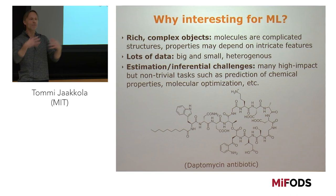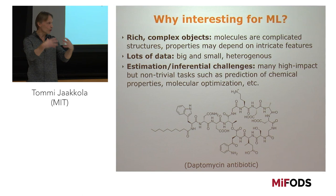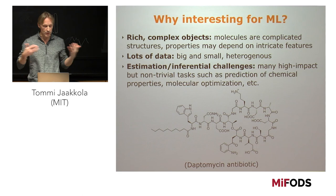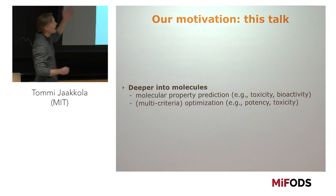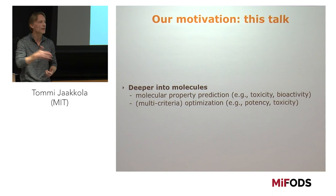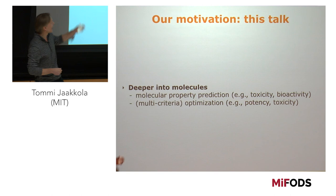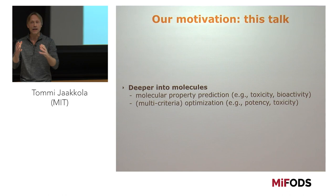Molecular optimization means you give me a molecule — known as a lead, something you already know is sort of good — and you want to automatically turn that into a molecule that's actually good as a drug. The broader problem I'll focus on is automated drug design: how do we solve this algorithmically? There are two components: understanding properties, and then actually solving the optimization problem of turning it into a better or entirely new molecule.